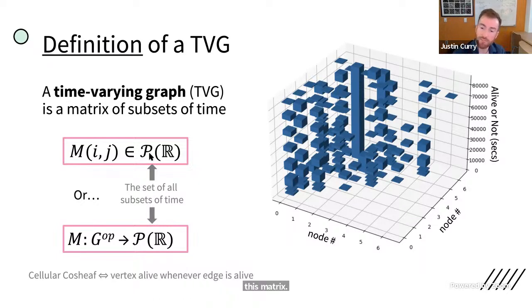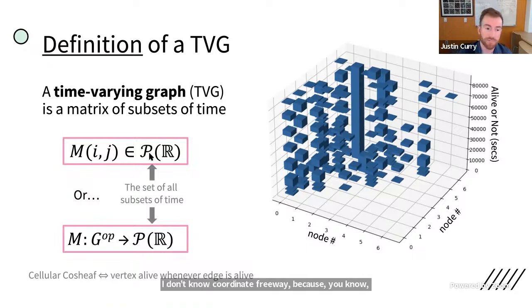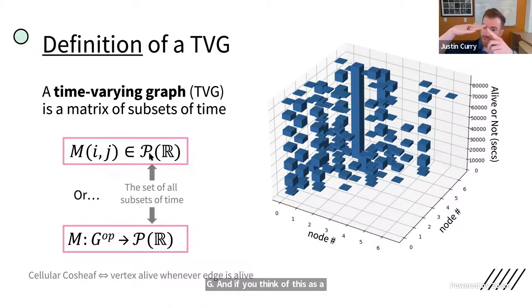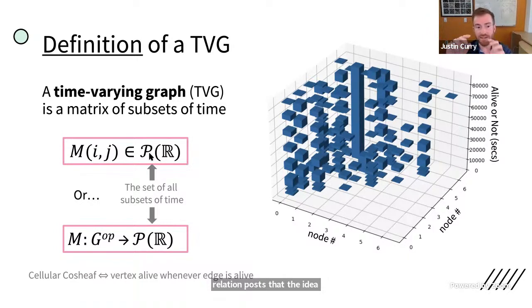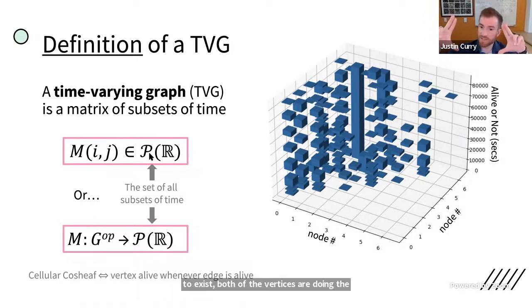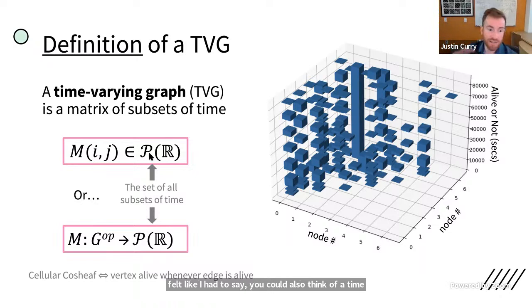And again, that edge being indicated by the ijth entry in this matrix. Alternatively, if you want to think of this in a more coordinate free way, because you know, matrices implicitly impose an ordering on your nodes, you can imagine that there's some underlying summary graph, which I can call G. And if you think of this as a poset where a vertex normally includes inside of an edge in this face relation poset, the idea that in order for an edge to exist, both of the vertices that are doing the communication need to exist, you end up having a natural inclusion, which goes from edges down to vertices. And so just because this is the Topos Institute, I felt like I had to say, you can also think of a time varying graph as a cellular cosheaf valued in this poset of subsets of time. But I'm going to suppress that perspective for the remainder of the talk.